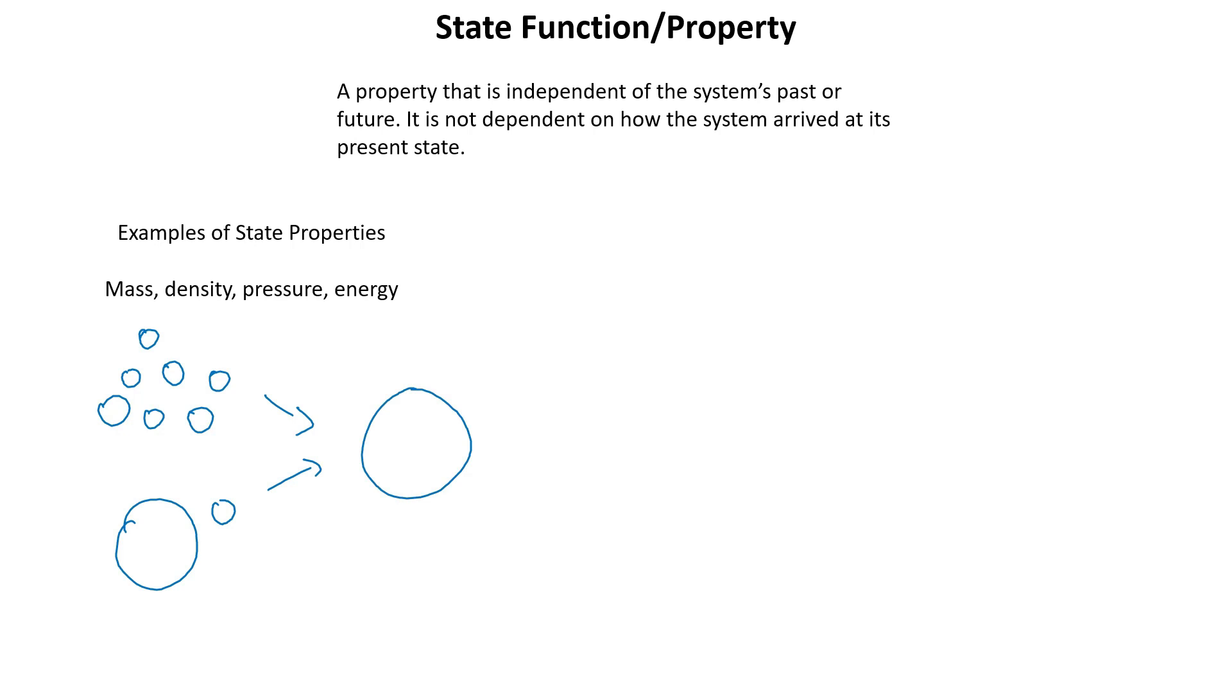It doesn't matter that one child started with smaller pieces and the other child started with larger pieces. They both end up with the same mass. That is why mass is a state function or a state property, because it doesn't matter how you got to that mass, you have the same mass.